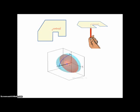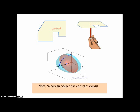Later on in this course, we're going to look at three-dimensional objects and find the centroid or center point of three-dimensional objects, but that's later. Note: when an object has constant density, the centroid and the center of mass are equivalent. If an object does not have constant density, then the center of mass will move towards the densest area — that's a topic for another day.